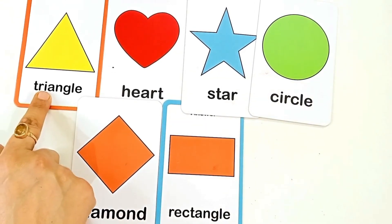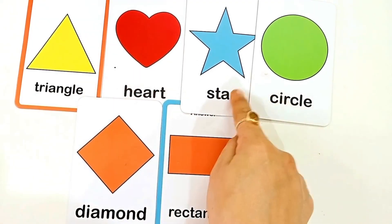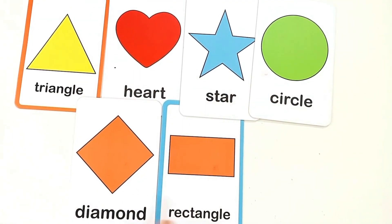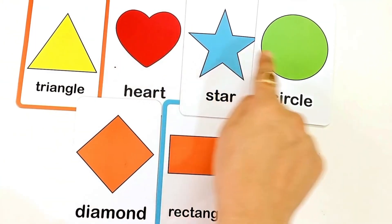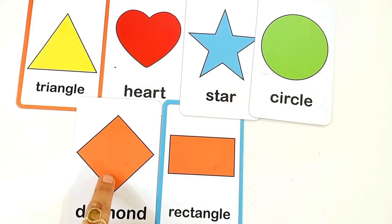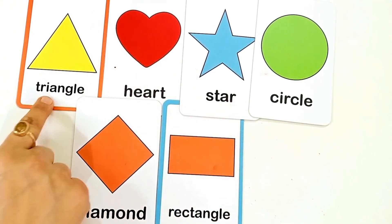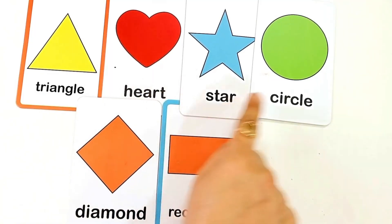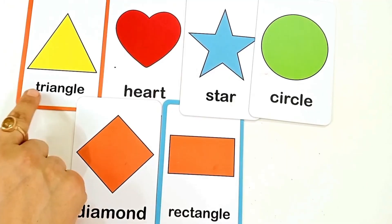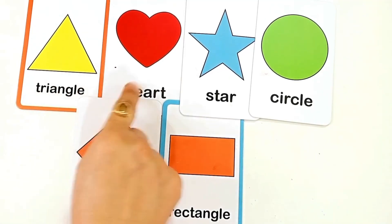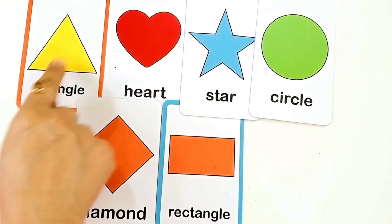Triangle. H for heart. S for star. C for circle. D for diamond. R for rectangle. Yellow color. Red color. Blue color. Green color. Orange color.